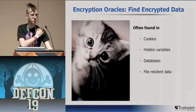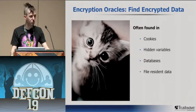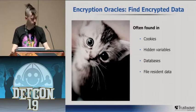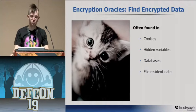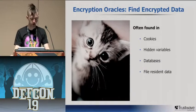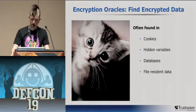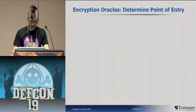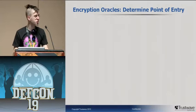When looking for encryption oracles, we're looking for encrypted data as output rather than input. You'll frequently find this in cookies and hidden variables, in databases, and in file-resident data. The next thing you need to do is determine the point of entry — when looking at encrypted output, it will often have identifying information, like a hidden field variable name.